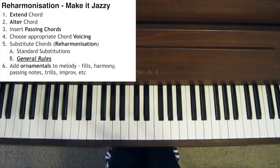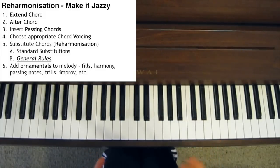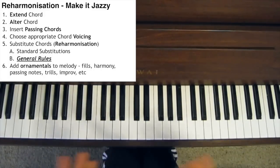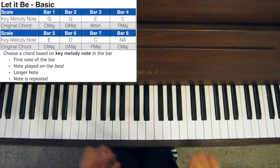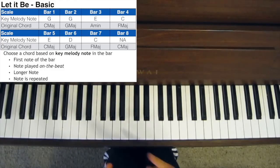The song I'm going to be jazzing up is 'Let It Be' by The Beatles. I've chosen it because it's a really simple four-chord pop song all in a single key, the melody is quite melodic which makes it more interesting when you reharmonise it, and I like The Beatles. I'm only going to be jazzing up the first eight bars, otherwise this video would be way too long. If you look at the picture-in-picture, I've written out the chord progression and the key melody note for each bar.